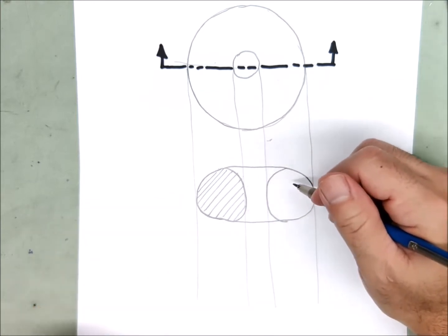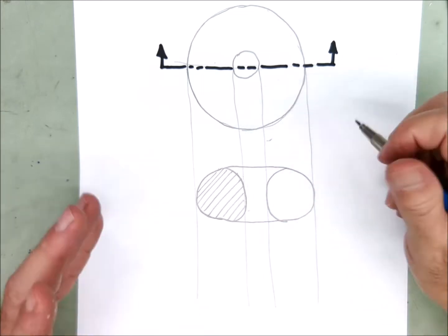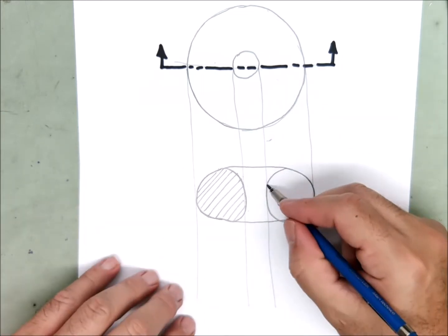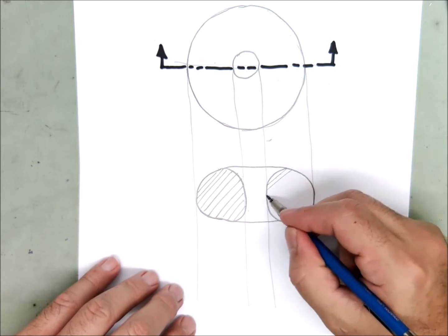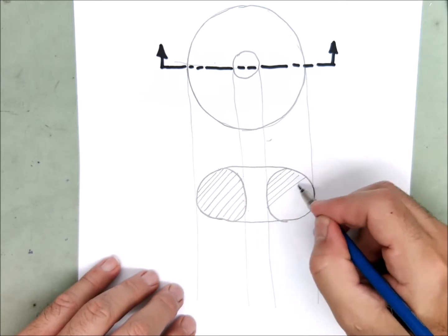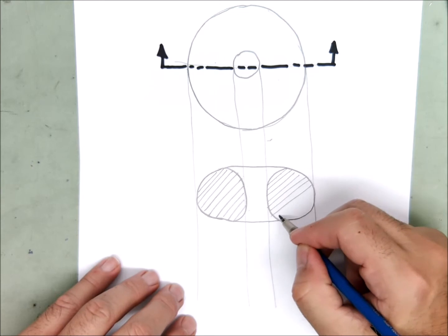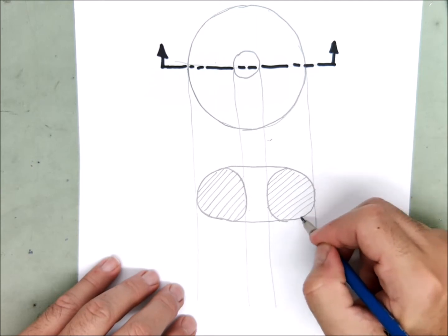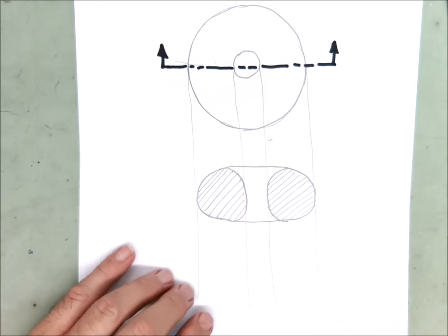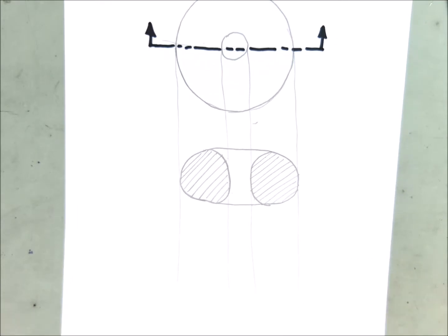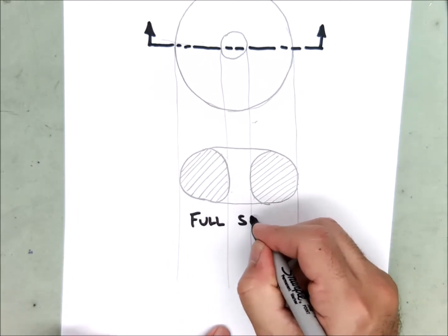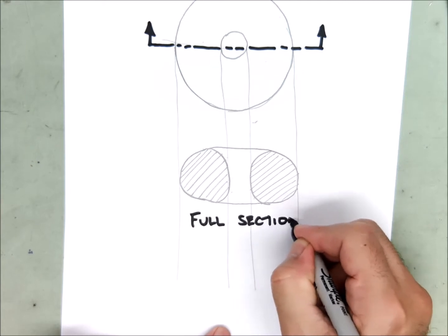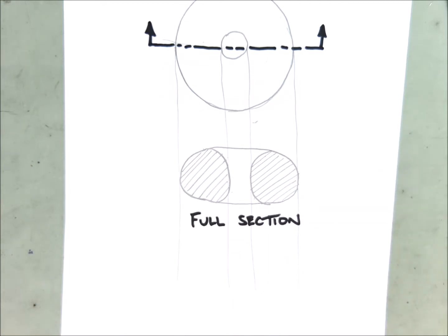Don't get artsy on me here and start going in the opposite direction so that it looks symmetrical. If it's one piece all the section lines need to go in one direction. There we go. And here is our full section of our bagel.